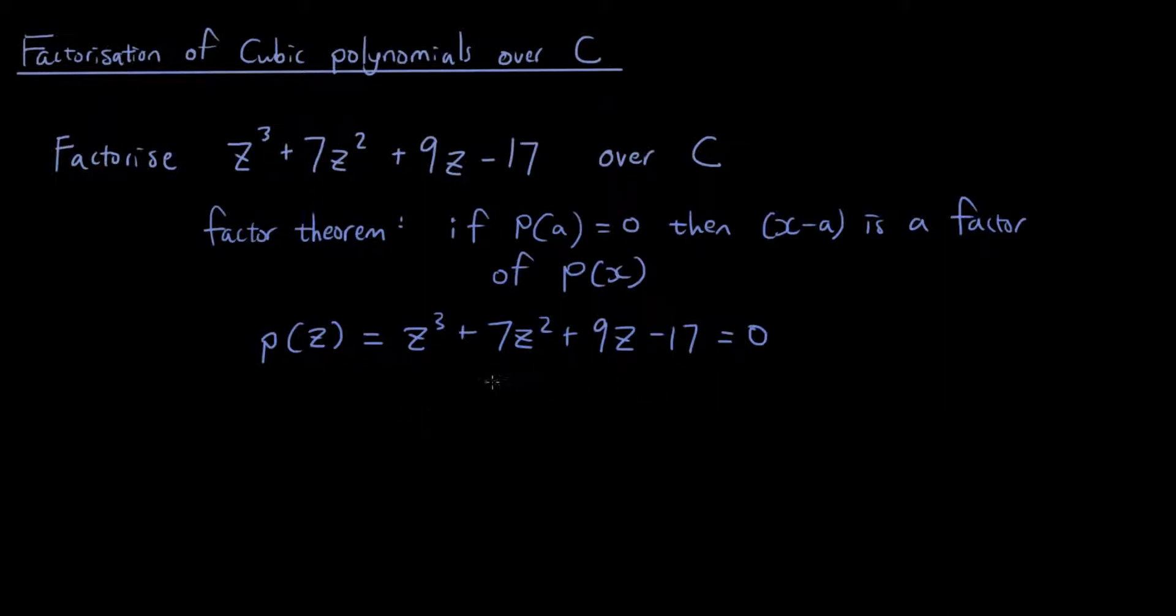And there's no easy way to find this other than just guess and check. So z³ + 7z² + 9z = 17. And now you just have to think of a number for z. Let's try z = 1. Then it's going to be 1³ + 7 + 9 which is 17.